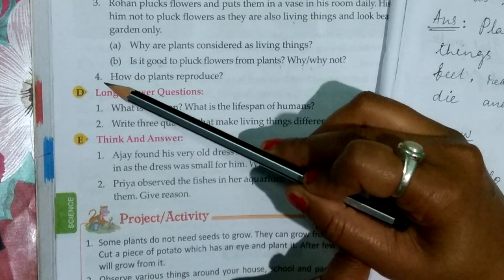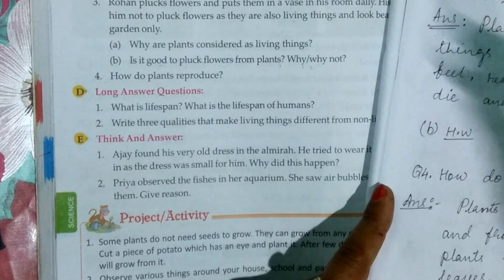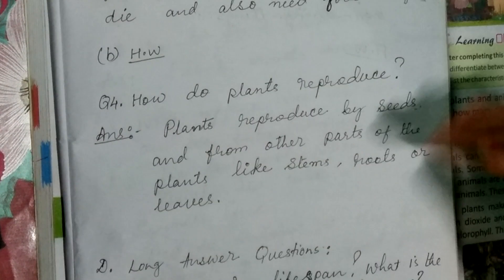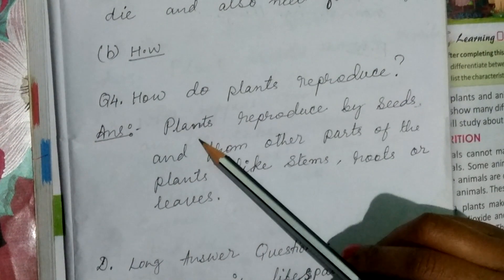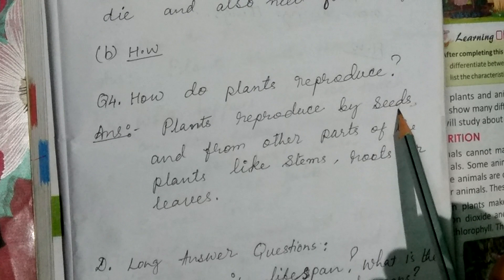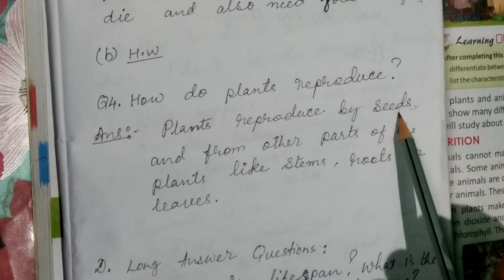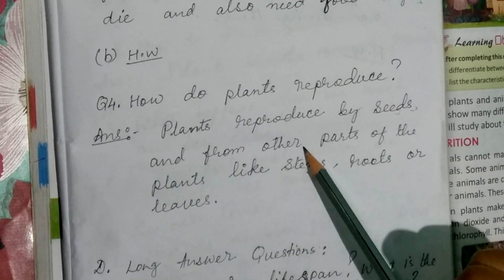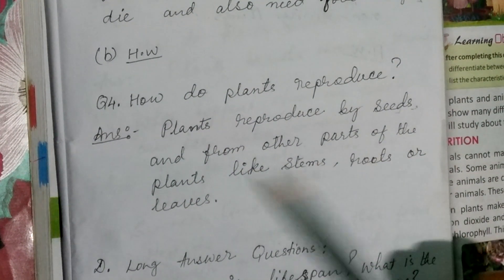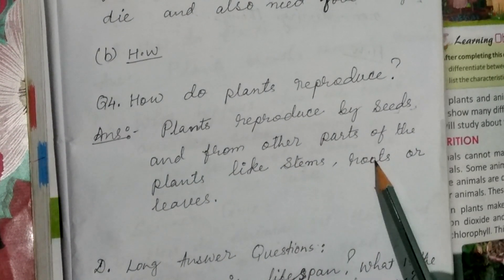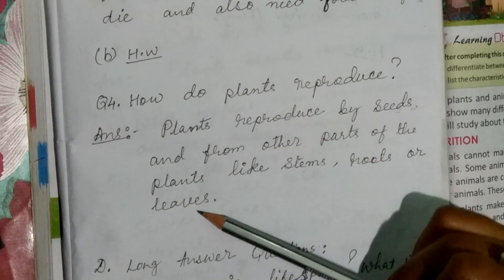Question number four: How do plants reproduce? Plants reproduce by seeds and from other parts of the plant like stems, roots or leaves.